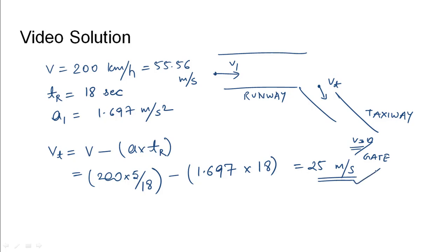Now, to find the distance d from the runway exit to the gate, we use the third equation of motion: d = vₜ²/(2a₂), where vₜ is the initial speed on the taxiway divided by two times the deceleration on the taxiway.